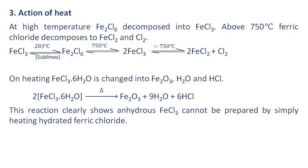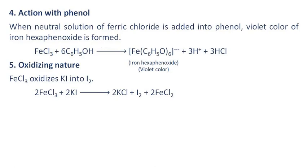On heating, ferric trichloride hexahydrate is changed into ferric oxide, water, and hydrochloric acid. This reaction clearly shows that anhydrous ferric chloride cannot be prepared by simply heating hydrated ferric chloride. Action with phenol: when a neutral solution of ferric chloride is added to phenol, a violet color of iron hexaphenoxide is formed. Oxidizing nature: ferric chloride oxidizes potassium iodide into iodine.